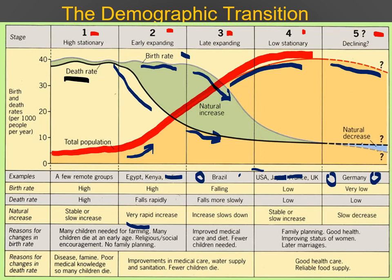This decline is usually based on economic factors, but there are social factors as well, not just economics. Take a good long look at this graph and make sure you understand what it's showing you in terms of these five stages. You don't have to copy it, just make sure you understand the concept.